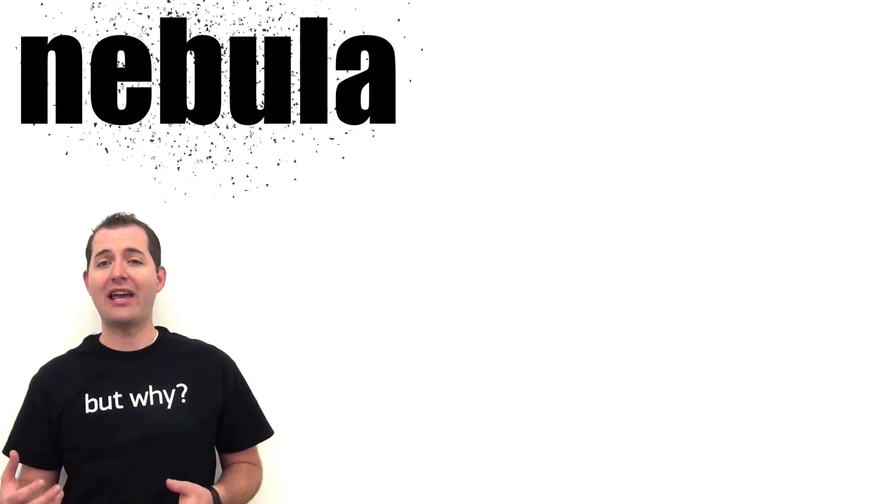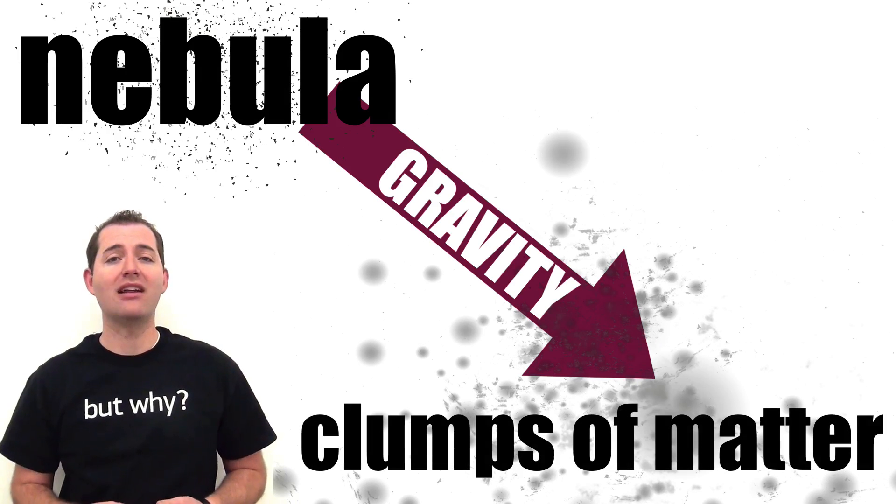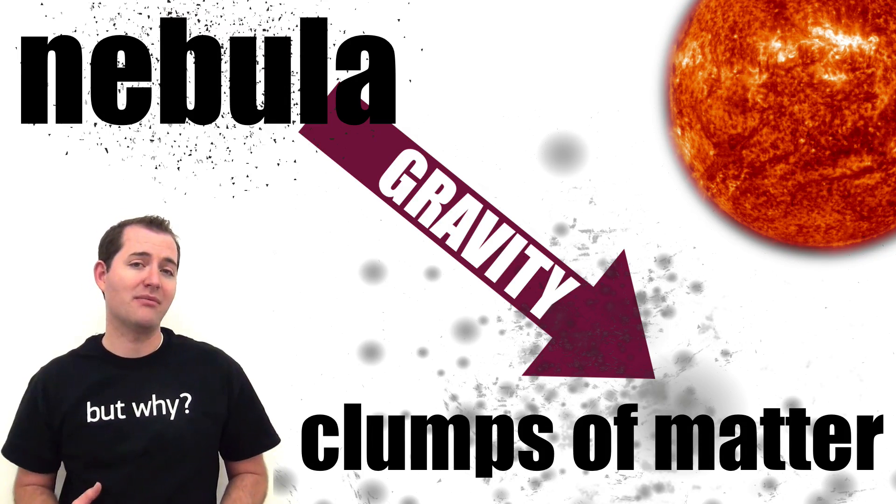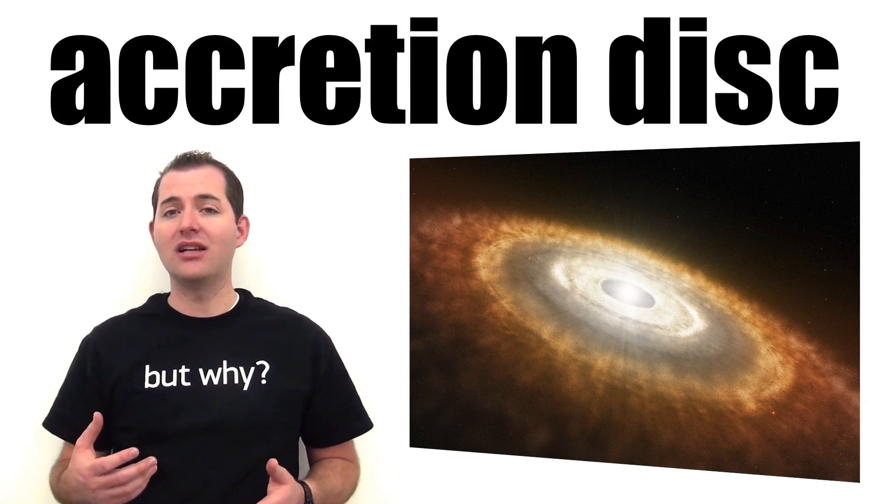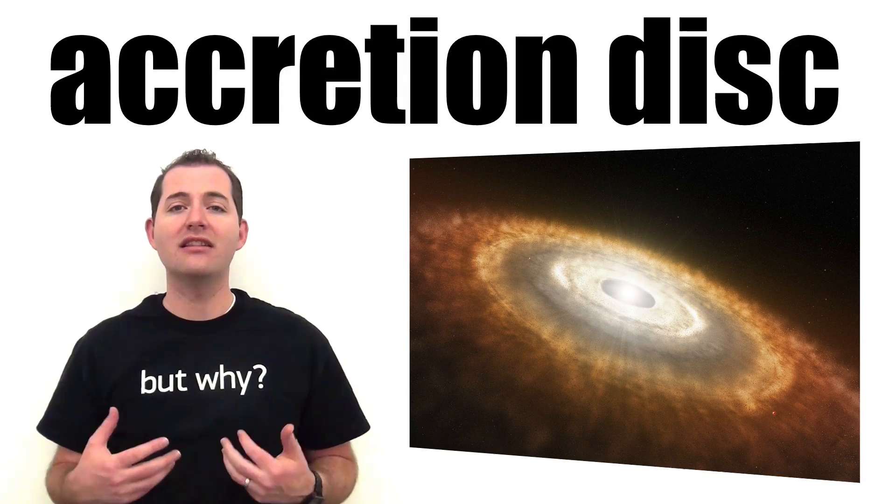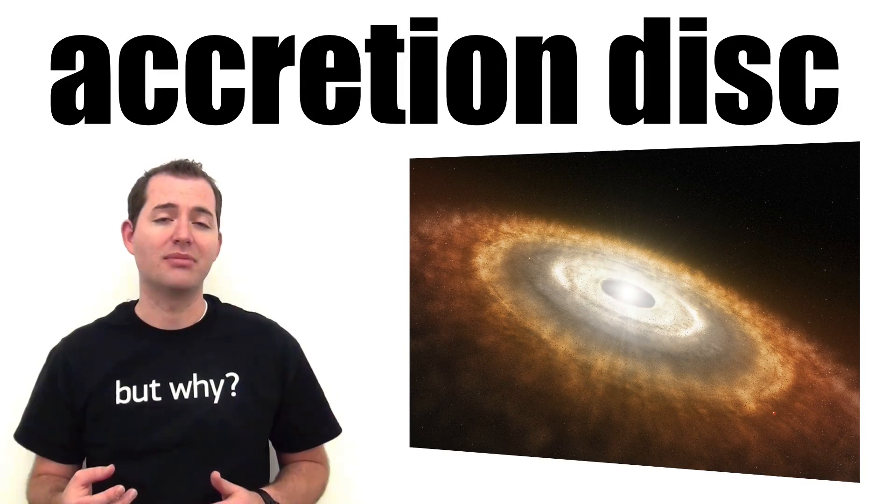Our solar system started as a nebula of gas, but through the force of gravity it was able to create clumps of matter throughout it. There began to be one central clump in our solar system which would later become the sun. Around this central clump was what's called an accretion disk. This is where all of the other matter in this nebula began to flatten out and orbit around this central clump.